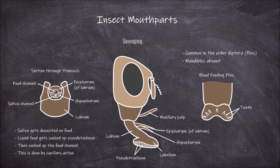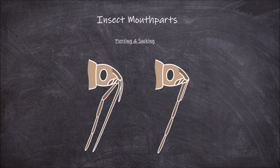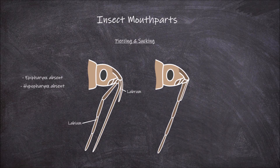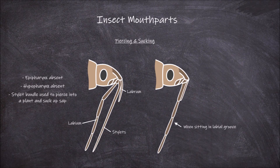The last variation in insect mouthparts we are going to go over are those specialized for a piercing and sucking mode of feeding. There are several different variations of modifications in different insects, but the example we are describing here are members of the order Hemiptera, also known as the true bugs. In these insects the labium is elongated and extends downwards, and has a groove in it called the labial groove. The labrum is present but the epipharynx of it is absent, as is the hypopharynx. The paired maxillae and mandibles are modified to form 4 stylets that sit in the labial groove, forming a food canal and a salivary canal. The stylet bundle is used to pierce into a plant and suck up plant sap.